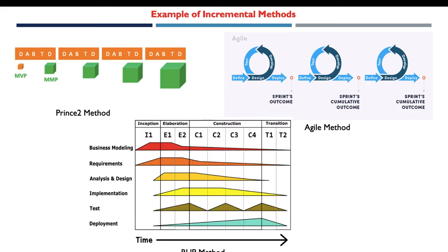Another example of incremental methods is the Rational Unified Process (RUP). This method is both incremental and iterative. It has four phases: inception, elaboration, construction, and transition. The iteration goes through many activities — from business modeling until deployment — and at the end of each iteration we have a release representing a subset of the final release. Each phase of the process may include one, two, or more iterations.